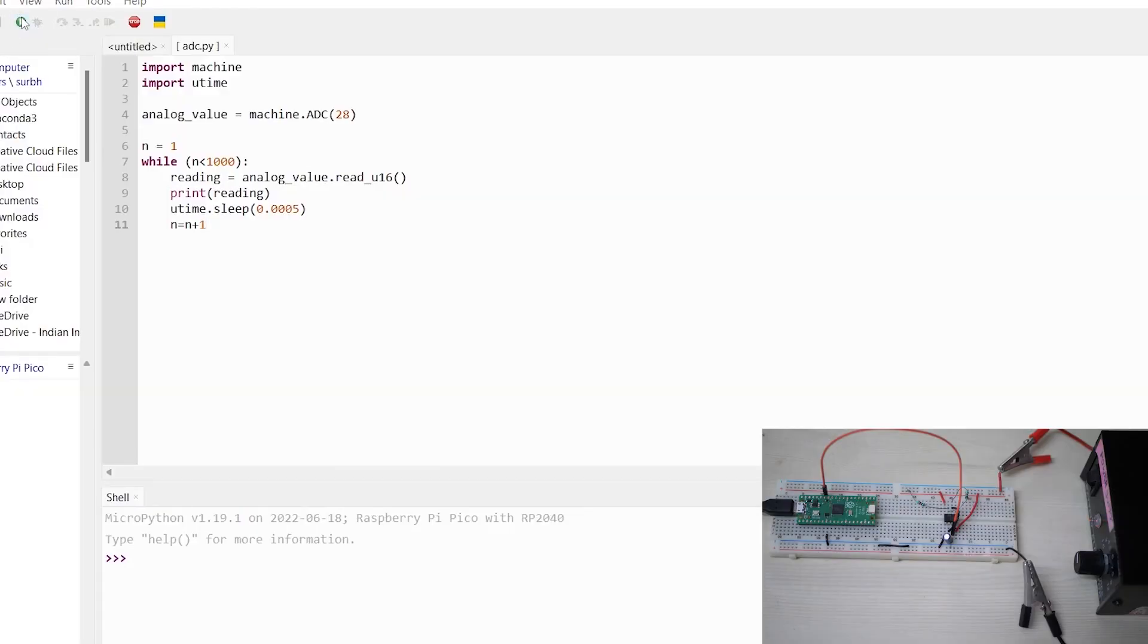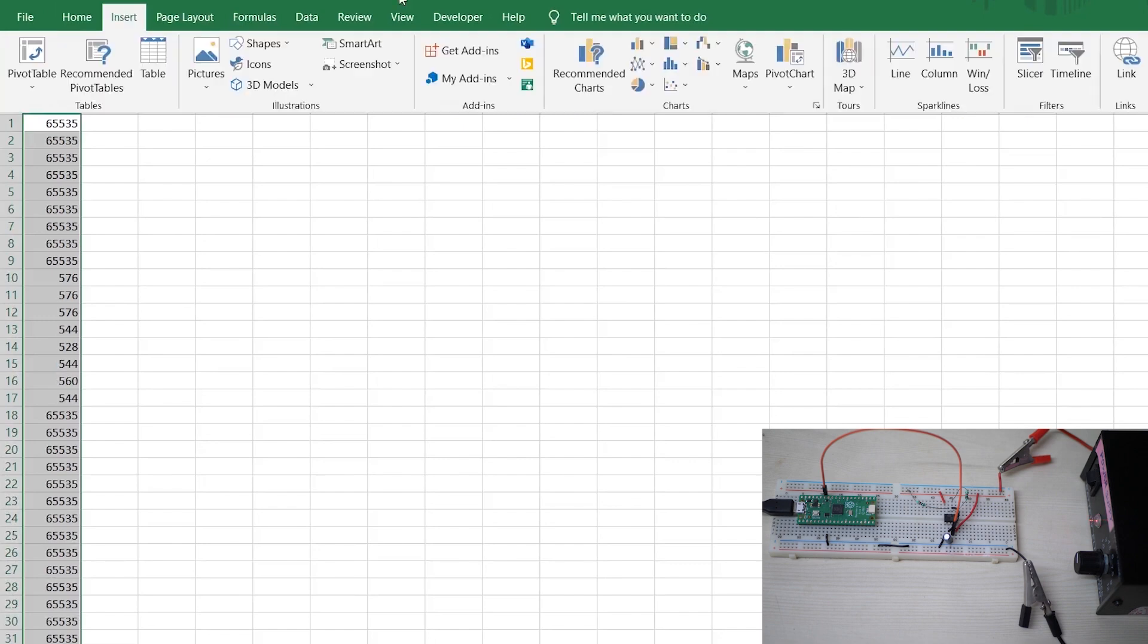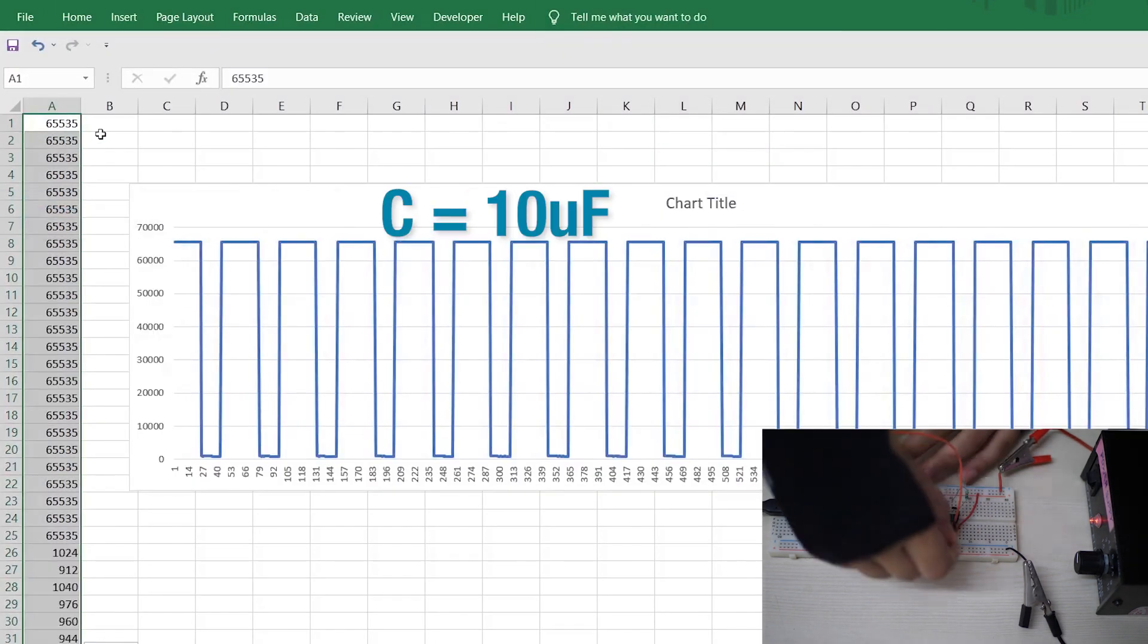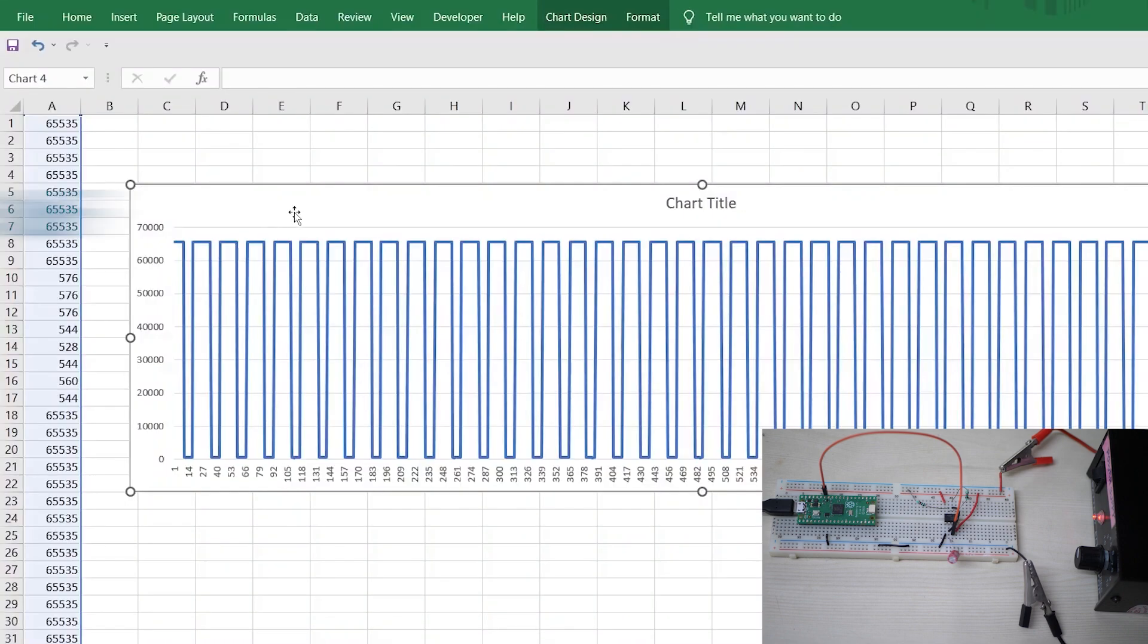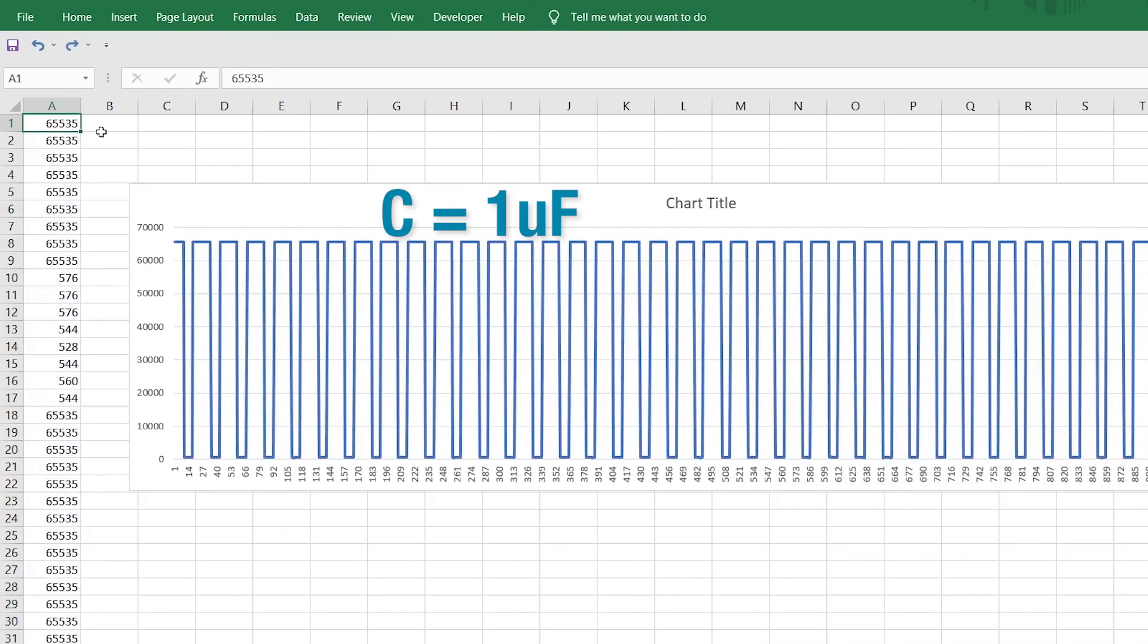This is code for A to D conversion. I printed the values at console and plotting it we see a good pulsating waveform. Let's change the capacitor to 1 microfarad and capture the waveform again. Yeah we can clearly see the change in time period so our proof of concept is working correctly.